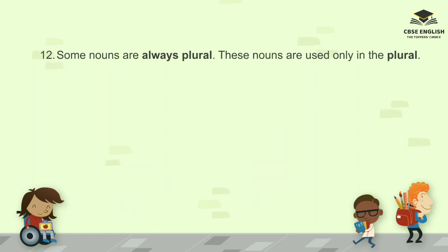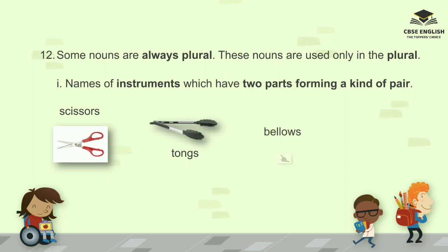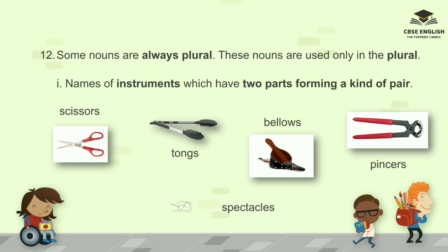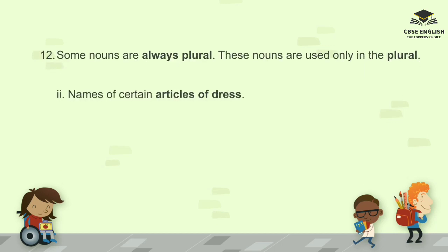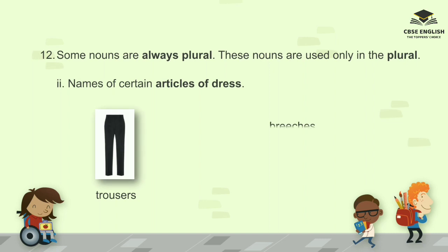Number twelve: some nouns are always plural — these nouns are used only in the plural. For example, names of instruments which have two parts forming a kind of pair: scissors, tongs, bellows, pincers, spectacles. Names of certain articles of dress: trousers, breeches, jeans, tights, shorts, pajamas.